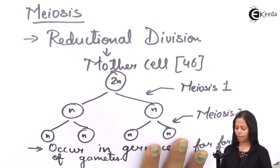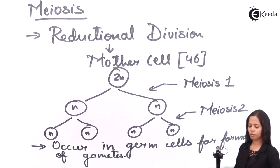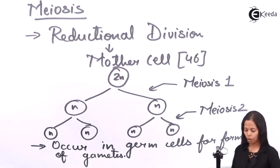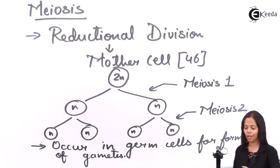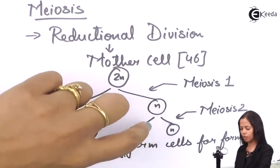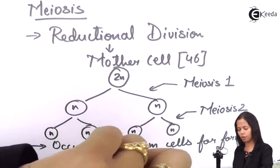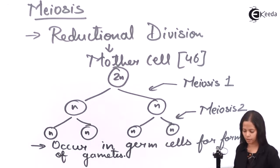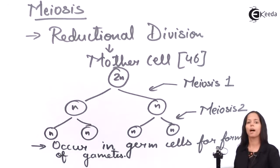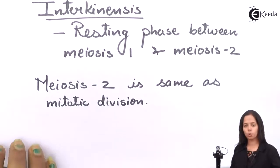Let's go back and review. Meiosis 1 is the reductional division. The haploid daughter cells formed after meiosis 1 then undergo mitosis. This is how each daughter cell from meiosis 1 forms a total of 4 daughter cells at the end of meiosis. Now we are going to study the second stage — what happens after meiosis 1, which is meiosis 2.